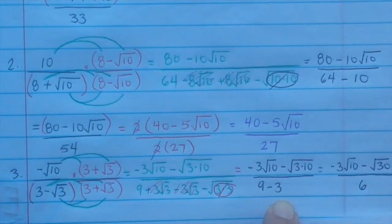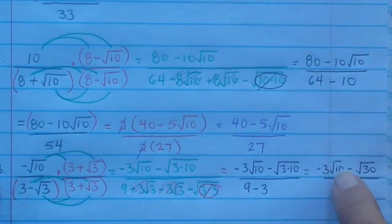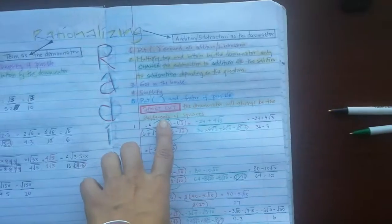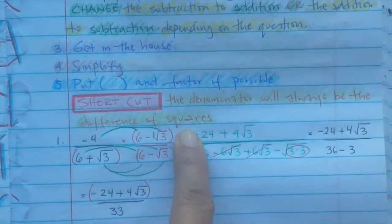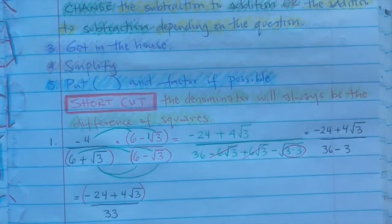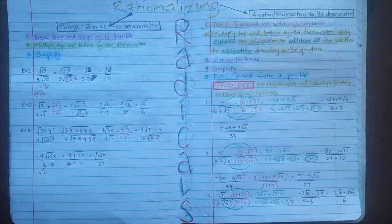9 minus 3 is 6. Is there anything I can take out? No — there's nothing I can take out, so I'm done. These are shortcuts: the denominator will always be the difference of squares. If you understand what that means, you can do this a lot faster. But if you don't understand what that means, I'm not going to go into it, and that's it.